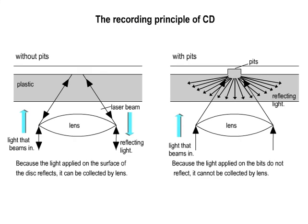Depressions called PIDs — small holes — have been opened in the aluminum disk surface. One bit of data is represented by the inclination of a PID. The reflection of laser light shined on the PID is used to identify whether it is 1 or 0.